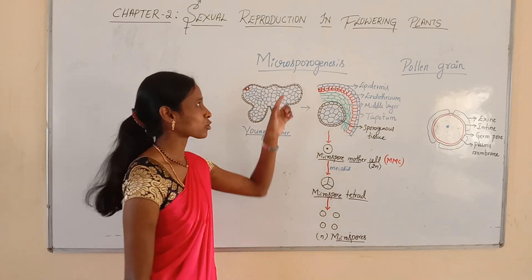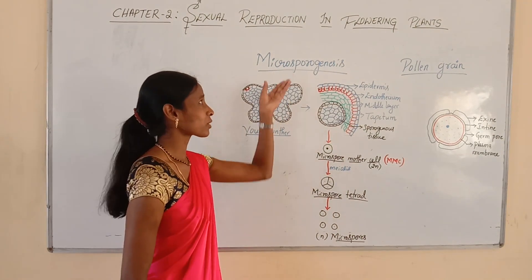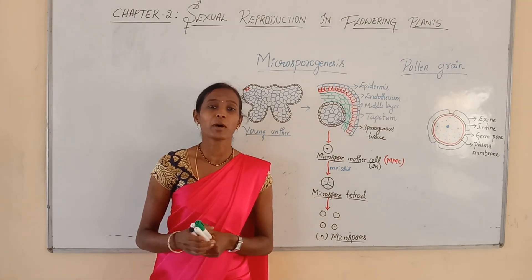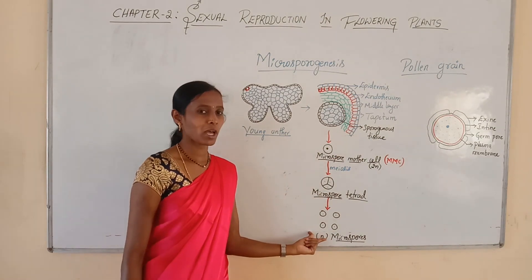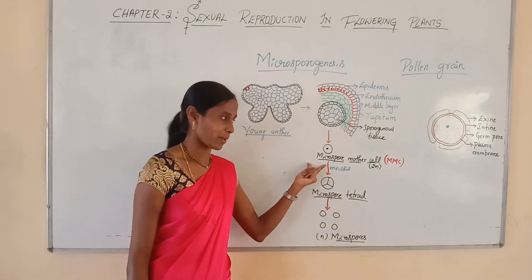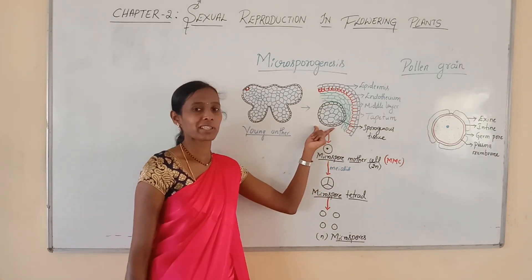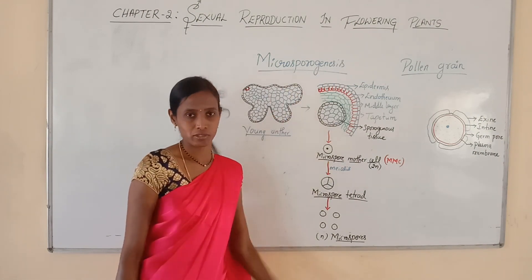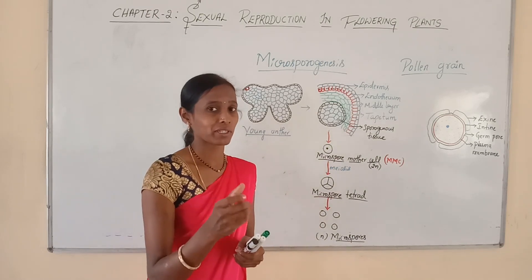Let us talk about microsporogenesis in a detailed manner. What is microsporogenesis? Microsporogenesis is the process of formation of microspores from the microspore mother cell by meiotic division within the microsporangium of the anther. This is the definition I gave in the previous class.